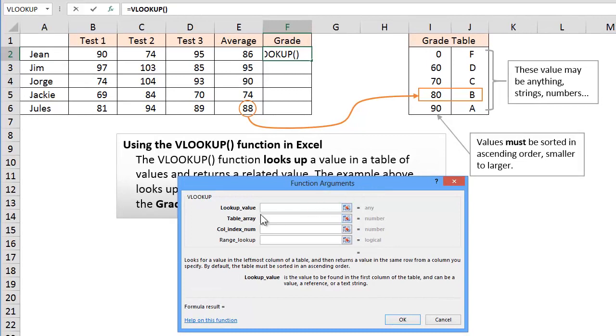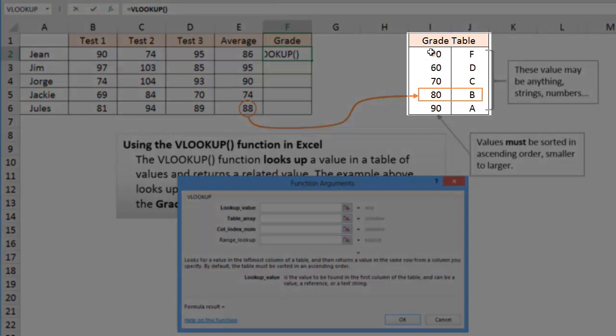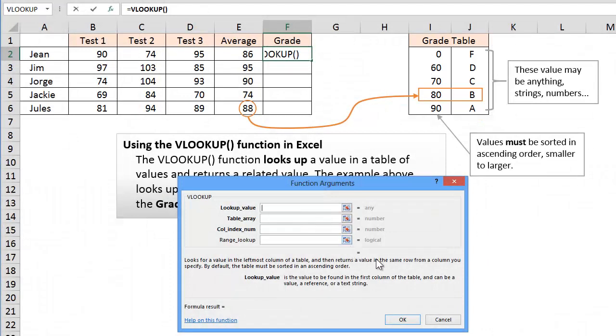The Vertical Lookup function basically is pretty easy to use. It looks for a value in the leftmost column of a table. So here is our grade table and we have two columns in this grade table. The scores are the leftmost column.